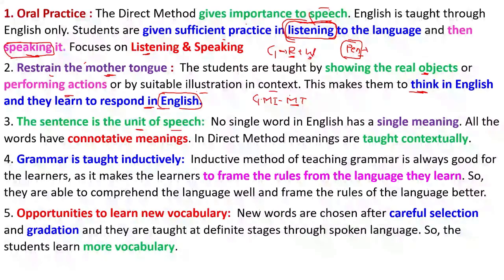The sentence is the unit of speech in direct method. In grammar translation method, only the word is the unit of speech — the student learns word by word. But in direct method, students learn in sentences. No single word in English has a single meaning; all words have connotative meanings. In direct method, meanings are taught contextually, so students are taught according to the context because English is a confusing language that can have more than one meaning.